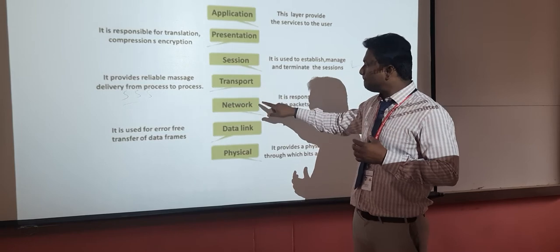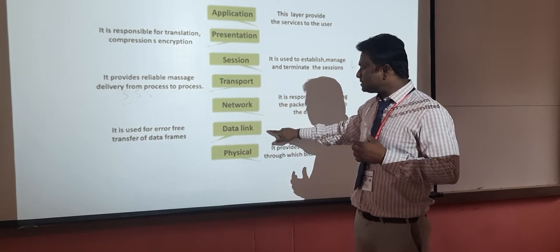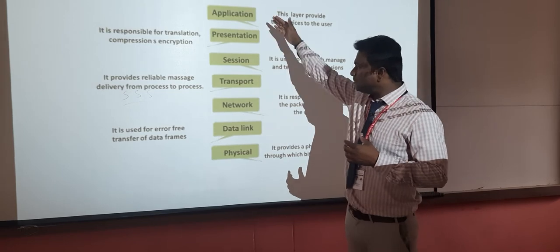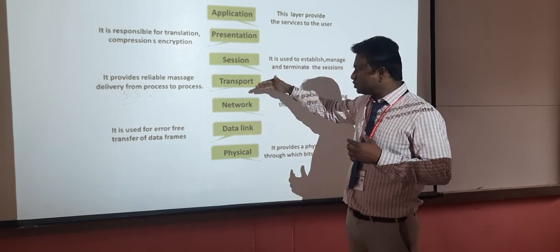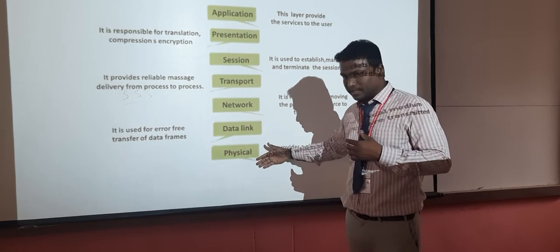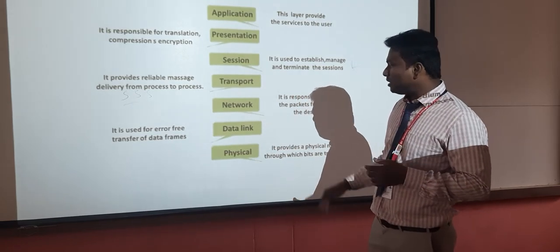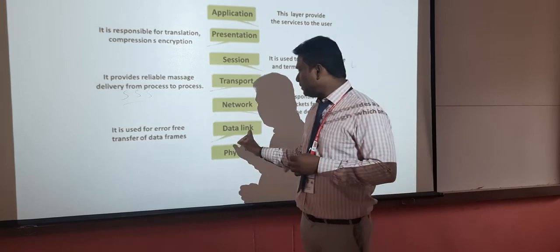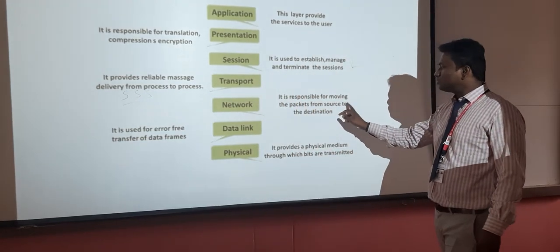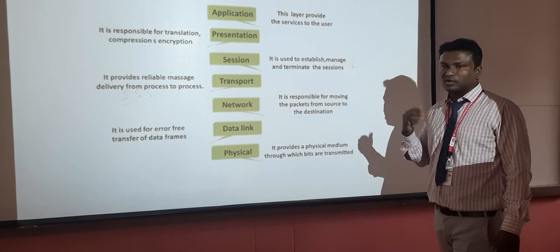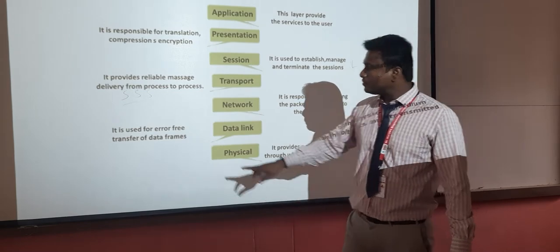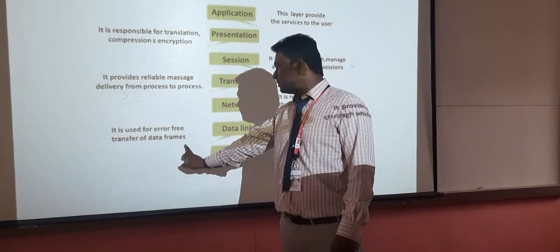So the data is converted top to bottom: data to segments, segments to packets, packets to frames, and frames to bits. The network layer is responsible for moving the packets from source to destination using source and destination addresses. The data link layer is used for error-free transfer of data frames.